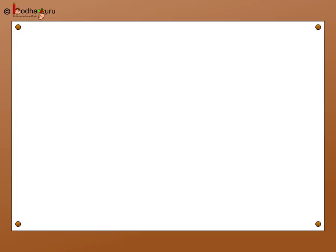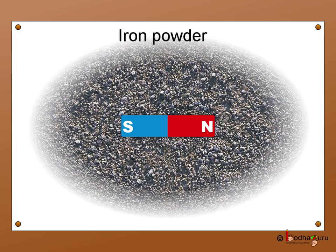We fix a white sheet on a drawing board and put a bar magnet in middle of it. Then we sprinkle some iron powder uniformly around the bar and tap the board gently. What do we see?